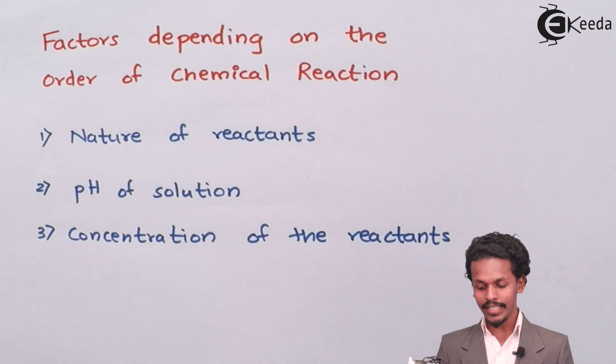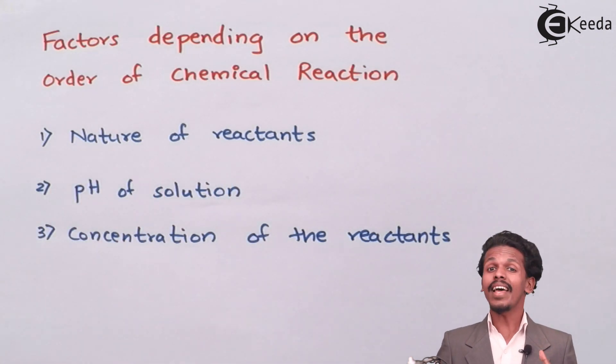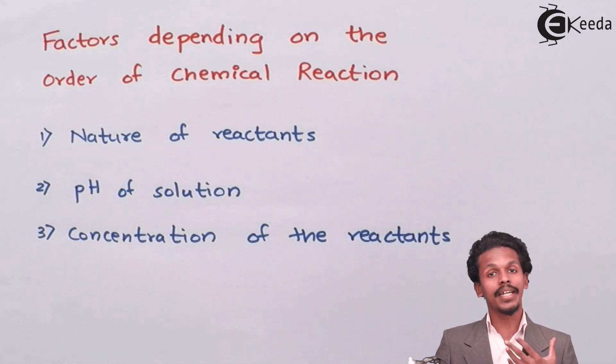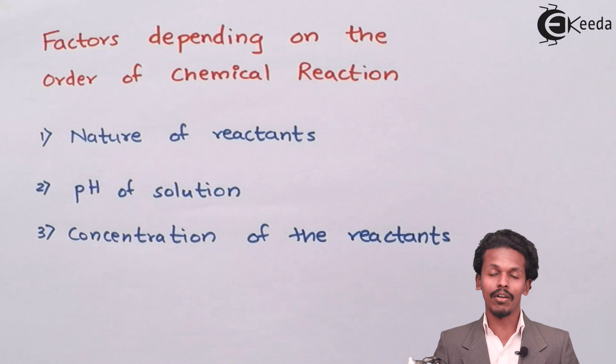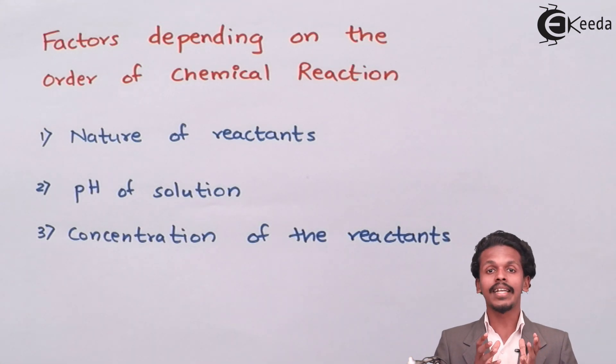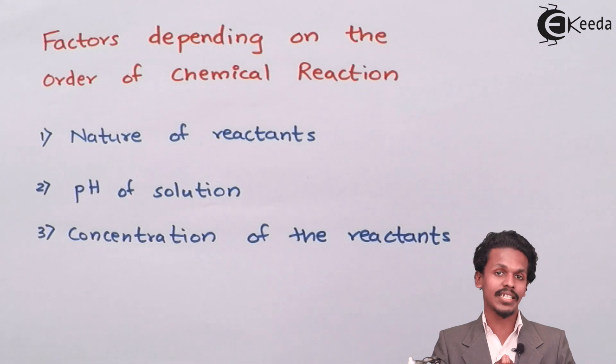The first factor is the nature of reactants. There are reactants which can increase the rate of reaction or be dependent on the rate law. It depends on the reactant as to what kind of rate of reaction it could give.